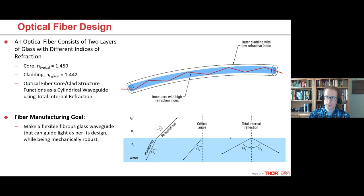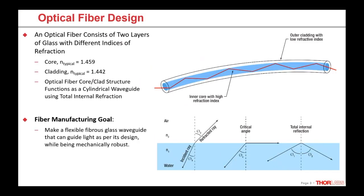Optical fiber in its most basic form consists of two layers of glass: the innermost layer called the core and the outer layer called the cladding. These two layers of glass have a slightly different refractive index — the core refractive index is a little bit higher than the cladding — and this core-clad structure and the index difference allows this fibrous piece of glass to function as a cylindrical waveguide, taking advantage of total internal reflection at that core-clad interface.